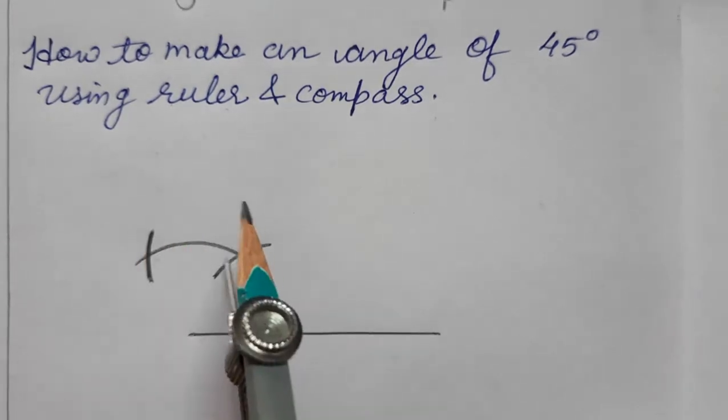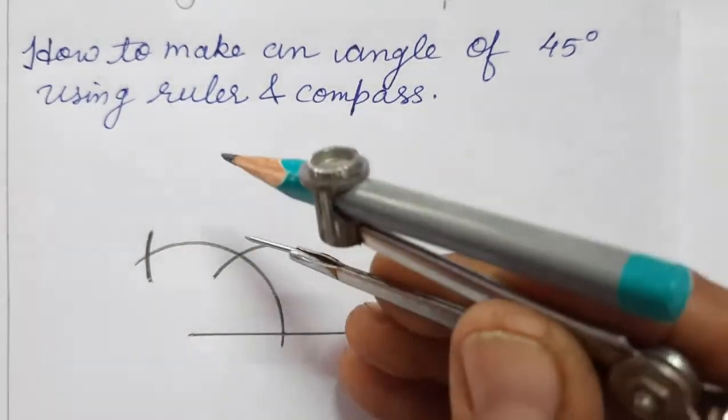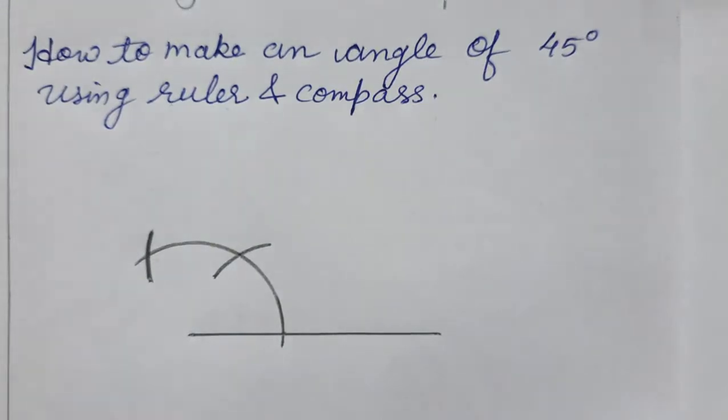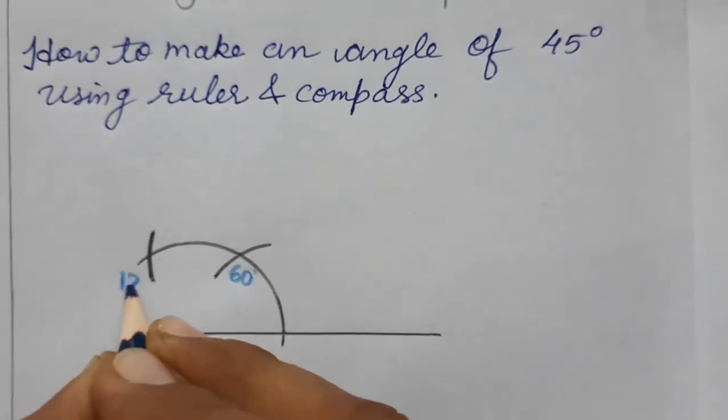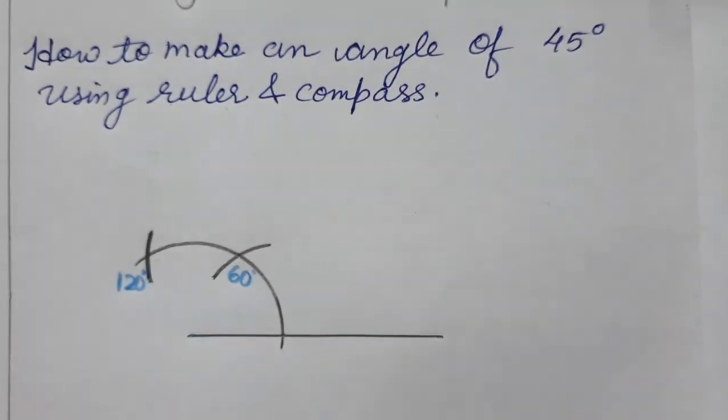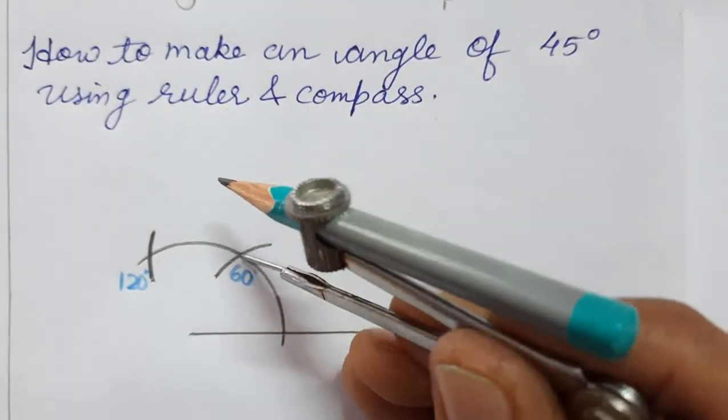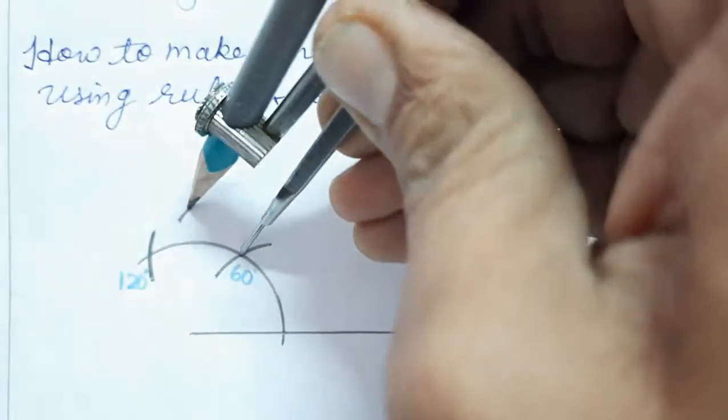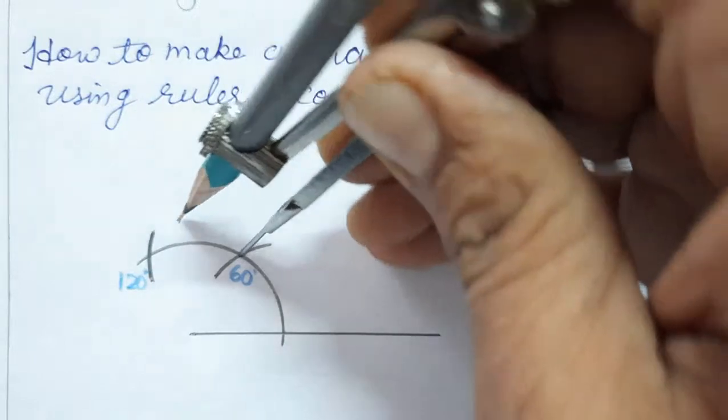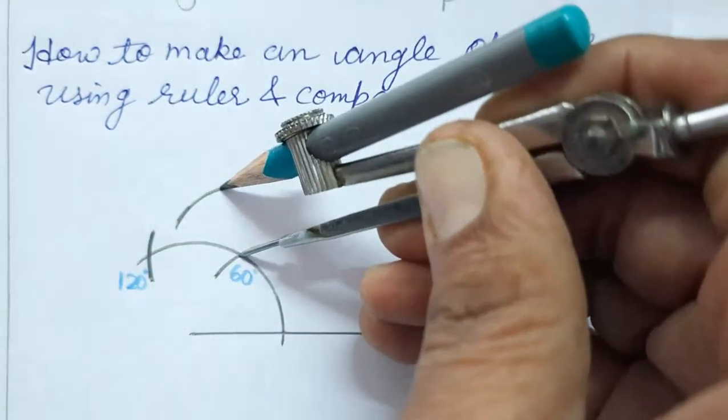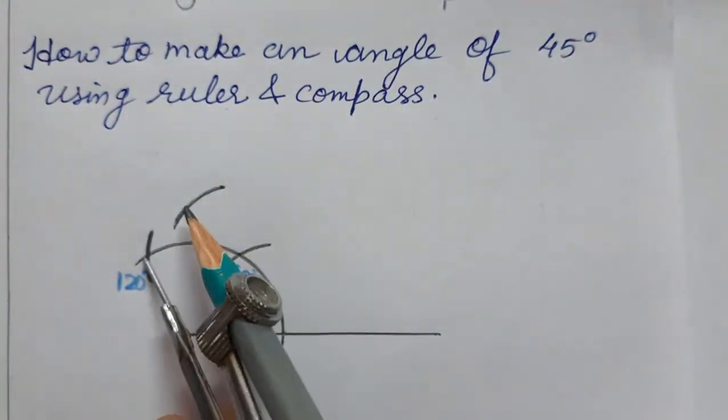We bisect it. Always take more than half - whichever you want to bisect, take more than half. One arc from here and one arc from here. So this is 90, but 90 is not required.